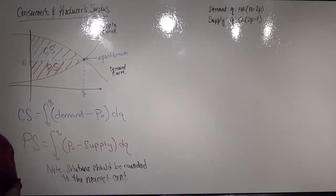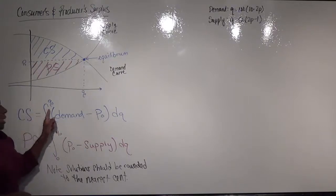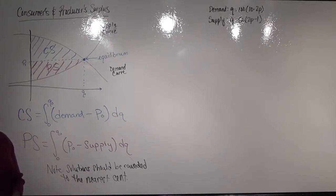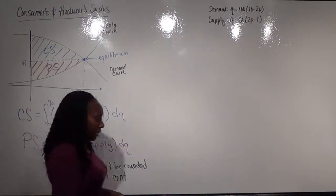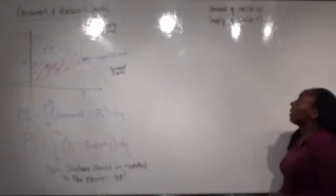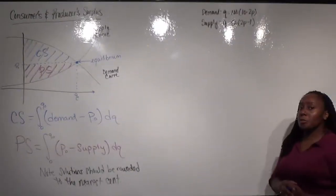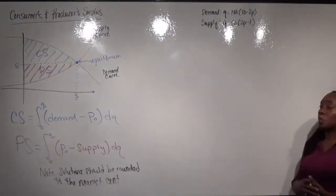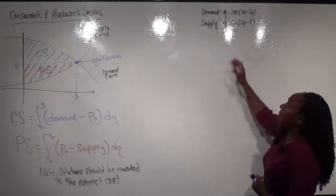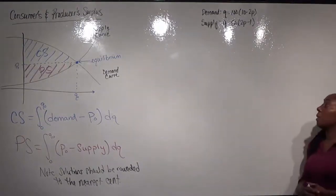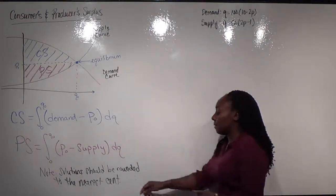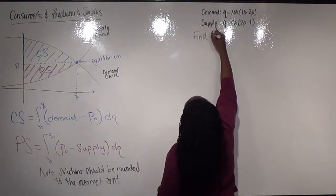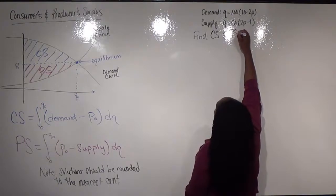Not all of your equilibriums are going to come out nicely, so when you're looking at q-naught and p-naught, leave them exact until you get to the end where you then round off. Let's look at an example. Here we're given that a demand equation for a certain product is q = 100(10 − 2p), and the supply equation is q = 50(2p − 1). We want to find the consumer surplus and the producer surplus.